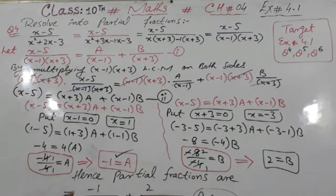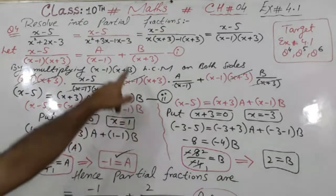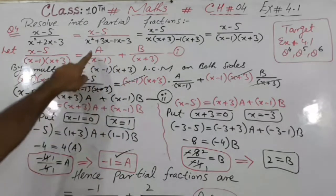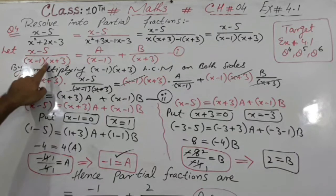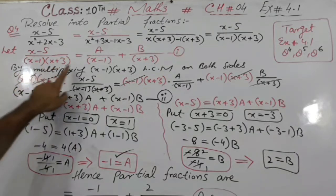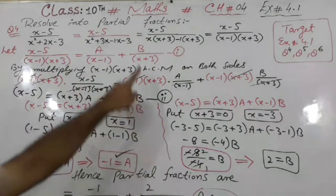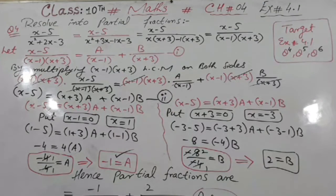So students, we have now found the partial fractions. When we write it as partial fractions, we put the values into equation number 1. The left-hand side is our original question so we don't write it; we just write the right-hand side. We substitute the value of A as minus 1 and the value of B as 2, and this is our answer.